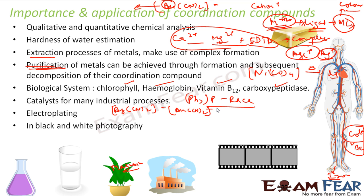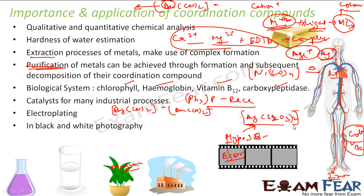In black and white photography, coordination compounds are also used. The photographic film is processed by washing with hyposolution. This hyposolution dissolves the undecomposed AgBr present in the film. When AgBr reacts with hyposolution, it forms a coordination complex — [Ag(S₂O₃)₂]²⁻. So coordination compounds are involved in photography as well.